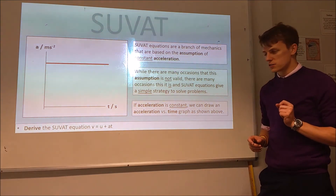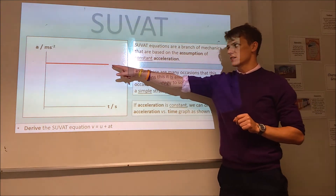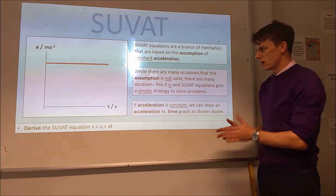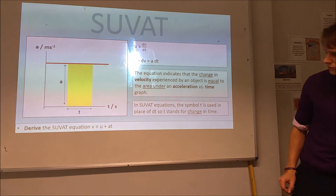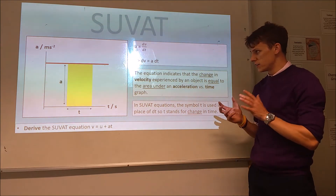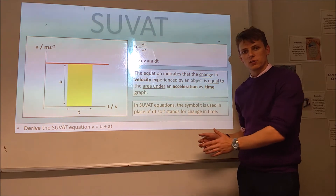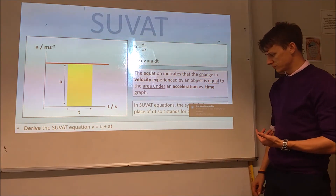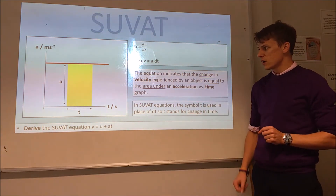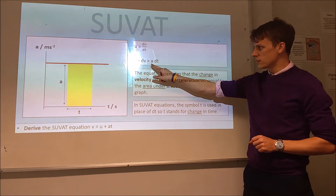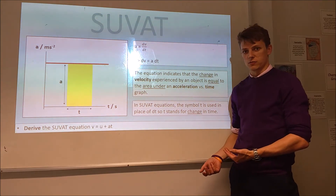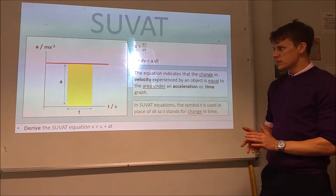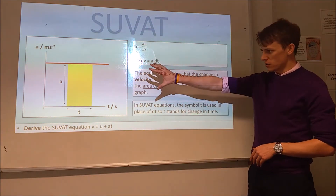If acceleration is constant, we know that our acceleration versus time graph is going to be a flat horizontal line — acceleration is the same for all times. Acceleration is the rate of change of velocity, or the change in velocity divided by the time it takes, or the gradient of a velocity versus time graph. We can rearrange to say the change in velocity equals acceleration times the time for which it experienced that acceleration. This means if we want to know how much the velocity of an object changes, we find the area under an acceleration versus time graph.